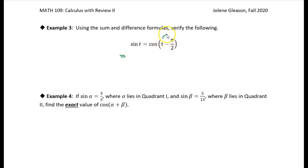So in this case, this is our theta, and this is our phi. The pi over 2 is our phi. So I'm just going to write the cosine of t times the cosine of pi over 2 plus the sine of t times the sine of pi over 2.